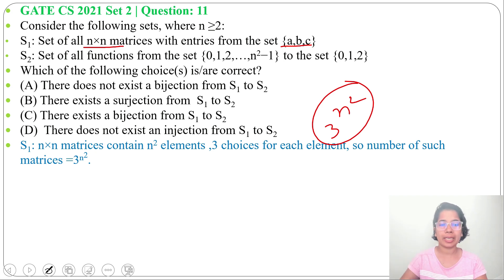For n×n matrices, n² elements, and for each position 3 choices, so the number of such matrices will be 3^(n²).